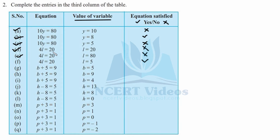Now for b plus 5 equal to 9: when you add 5 to 5 you get 10, which is not equal to 9, so we cross it. For part h: 9 plus 5 is 14, and 14 does not equal 9, so we cross it.